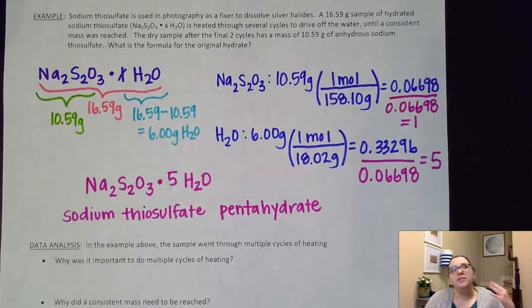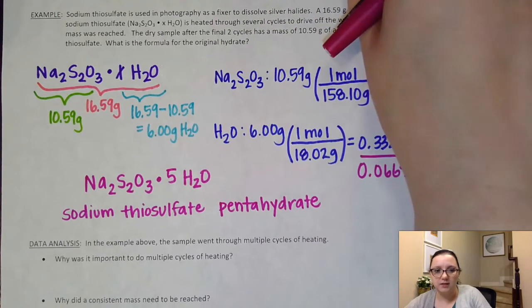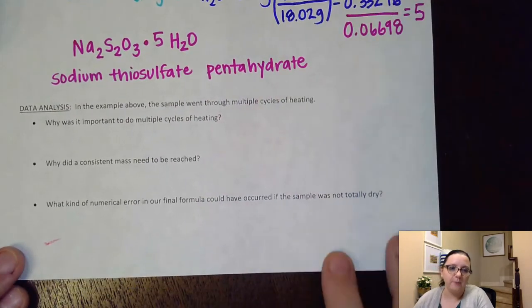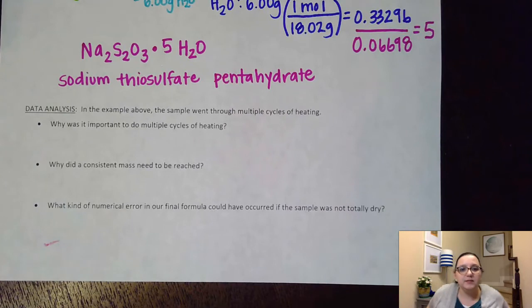Now these types of lab questions usually have some data analysis kind of questions with it. It's very common to see these types of questions on the AP test. So let's kind of look and see what kind of lab questions they ask us about. It says, hey, in the example above, the sample went through multiple cycles of heating. And it asks again, why was it important to do multiple cycles of heating?